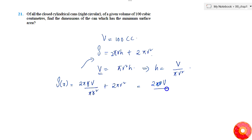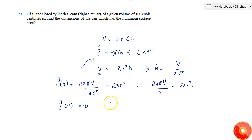We know that at a minimum or maximum, S'(r) = 0. So S'(r) = 2V · (−1/r²) + 4πr = 0.